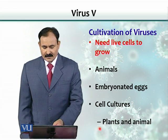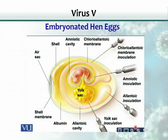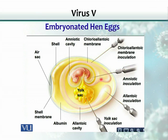Cell culture can originate from plant cells or from animal cells. In embryonated hen eggs, when the embryo is developing, it has various sites for viral replication and supports various viruses at various sites. These needles indicate the potential sites where we can inoculate the virus for culturing.